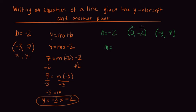So this will be x1, y1, and x2, y2. So we're going to do y2 minus y1 over x2 minus x1. So 7 minus negative 2 over negative 3 minus 0. So this is going to be 9 over negative 3 or just negative 3.